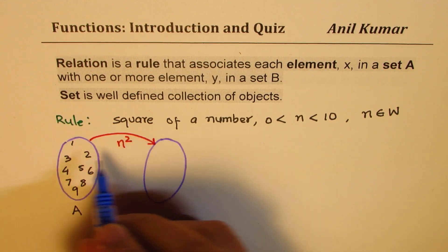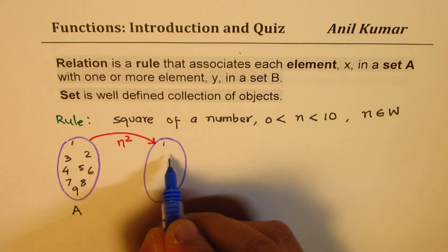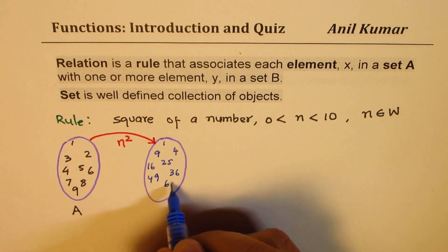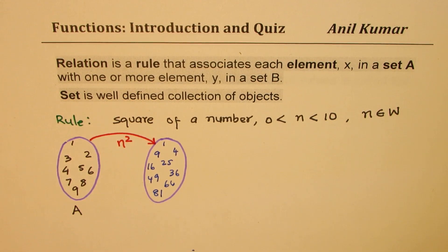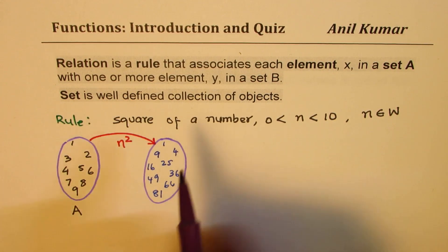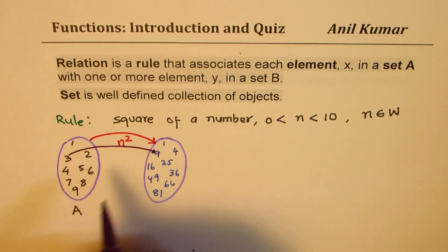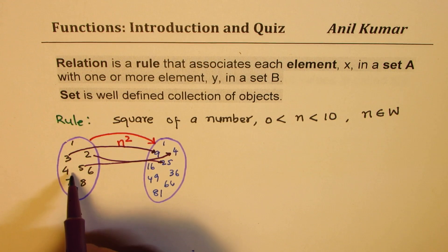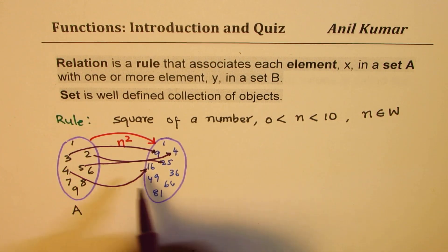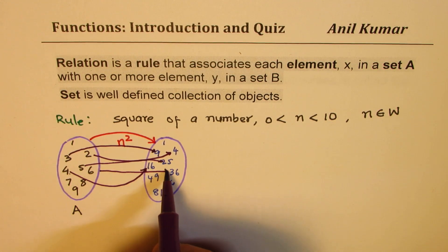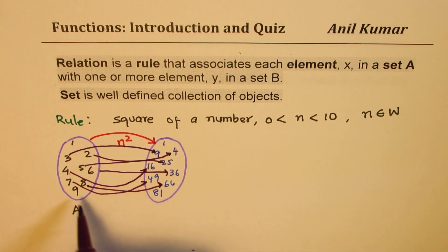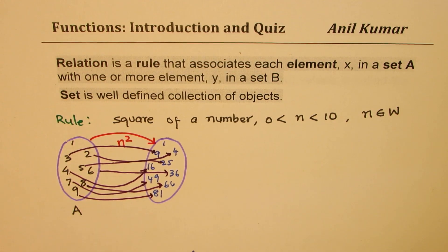Individually: 1 maps to 1, 2 maps to 4, 3 maps to 9, 4 to 16, 5 to 25, 6 to 36, 7 to 49, 8 to 64, and 9 to 81. A relation is a mapping of each element in one set to an element in another set. These arrows go in one direction and form the visual representation we call a mapping diagram.